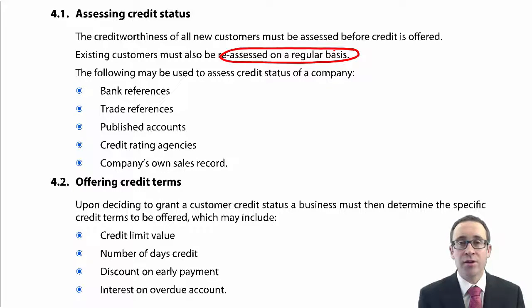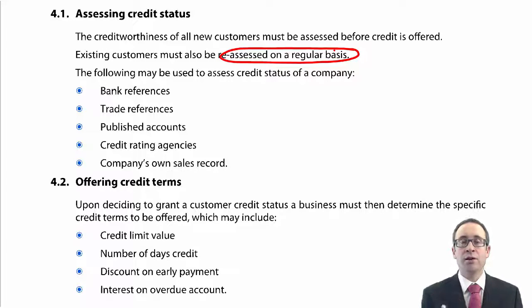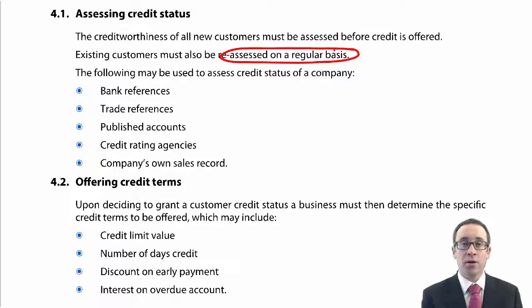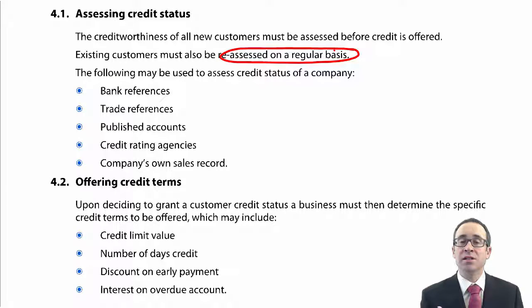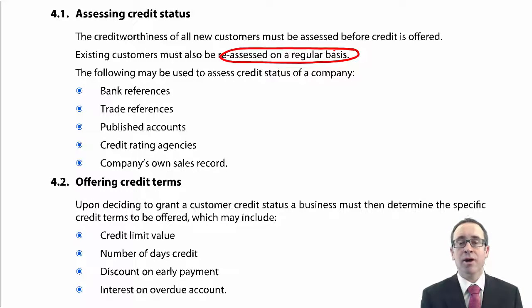A customer's creditworthiness can change over time. They may get into financial difficulties, and if they do, you need to be aware of that — you don't want something to happen without knowing. You want to monitor that customer's creditworthiness on a regular basis. There are five ways we can assess a customer's creditworthiness. We could get references from the bank explaining that they are regular payers. We could get references from the trade — if that customer has entered into credit purchases with other entities, we could get references from them.